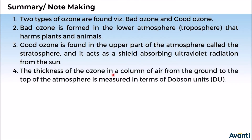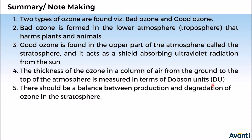The thickness of the ozone in the column of air from the ground to the top of the atmosphere is measured in terms of Dobson units, represented as DU. There should be a balance between production and degradation of ozone in the stratosphere.